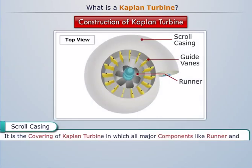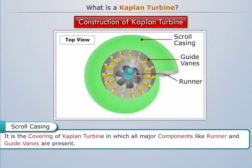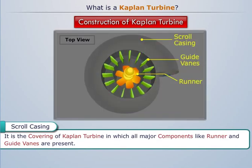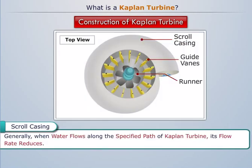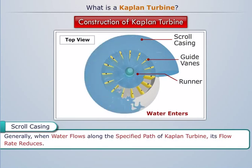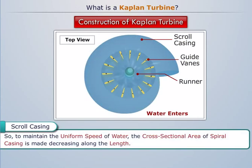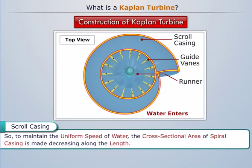Scroll casing: It is the covering of the Kaplan turbine in which all major components like the runner and guide vanes are present. Generally, when water flows along the specified path of the Kaplan turbine, its flow rate reduces. So to maintain the uniform speed of water, the cross-sectional area of the spiral casing is made decreasing along the length.